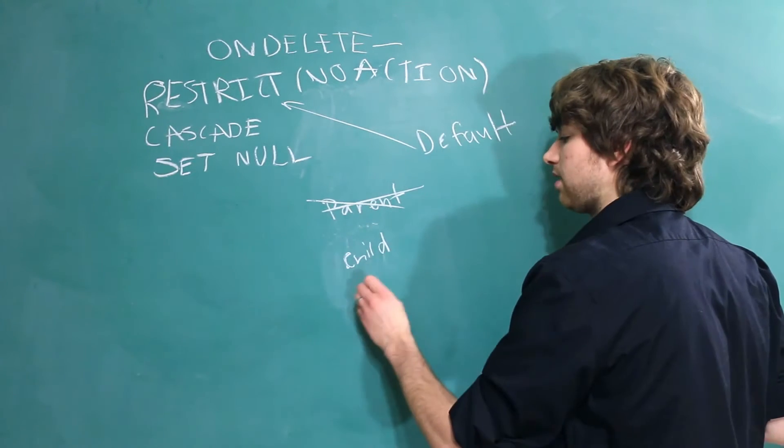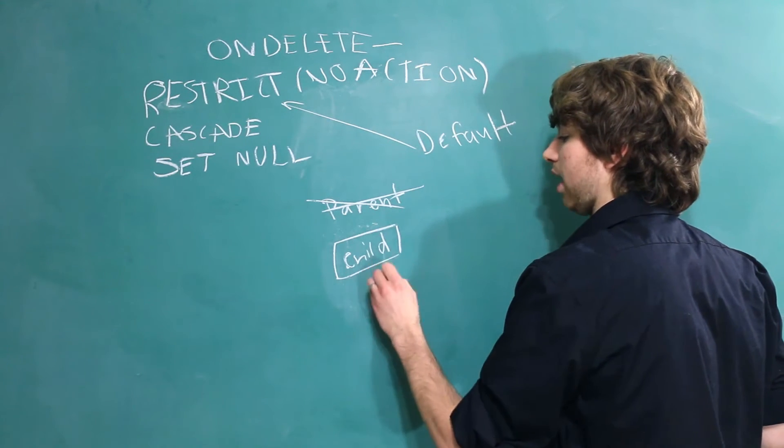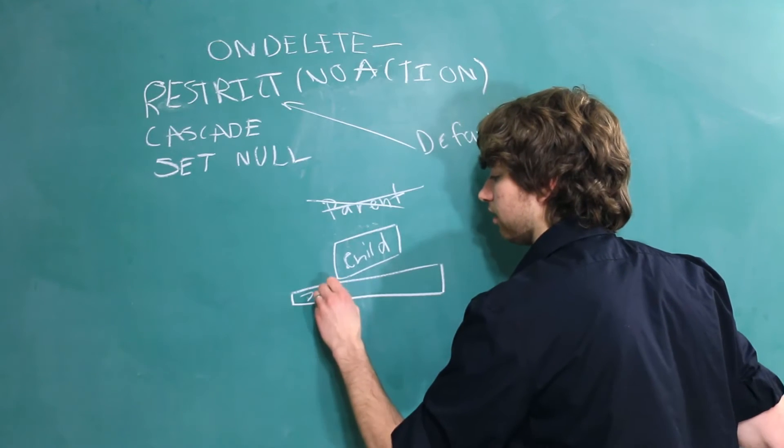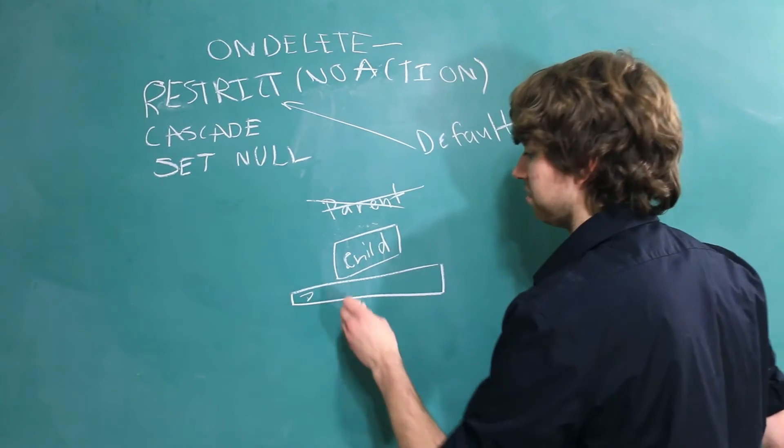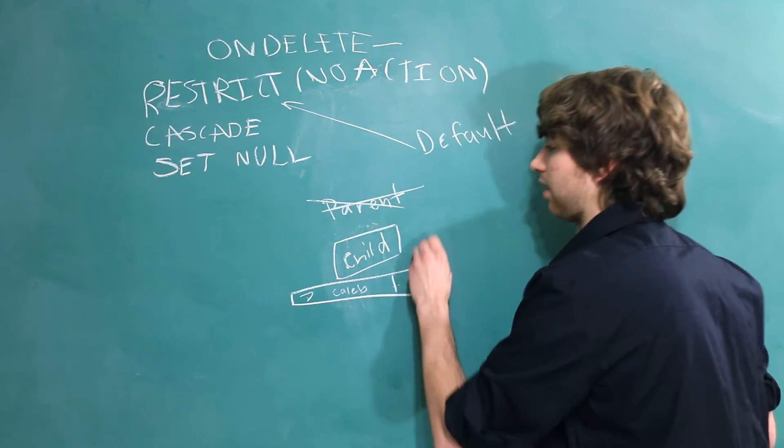Now, if we go to SetNull, what that means is that the field within this child row that references the parent. So let's say this is all the information, we have maybe an ID of 7, and it depends on what the table's about. But let's say it's a user's table, we might have a user's name, and then we'll have a column that references that parent.